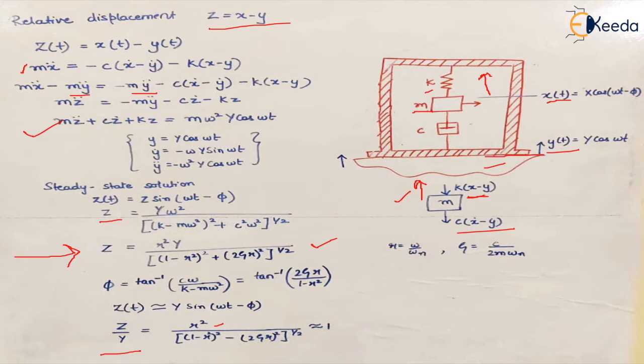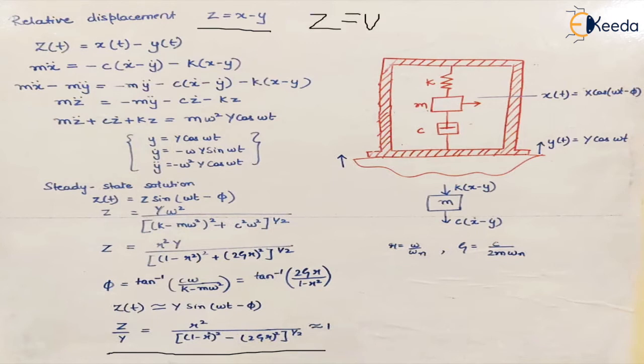Now in case of vibrometers, this ratio is almost equal to 1. That means the function of z(t) is given by y sin(ωt minus φ). If you look at this equation which says that z upon y is almost equivalent to 1, what it means is that the relative displacement between the mass and the base, z which is equal to x minus y, is almost equal to y. That means the relative displacement is almost equal to the displacement of the base of the vibrating body.